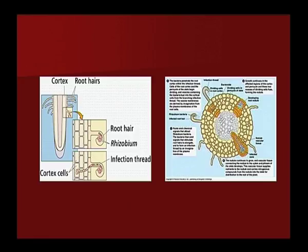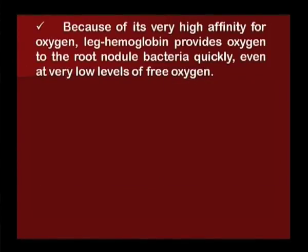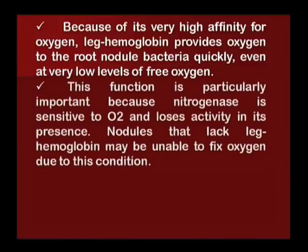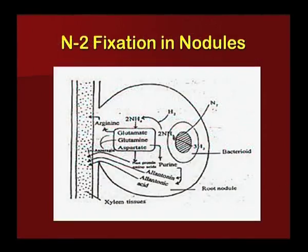In this diagram, we can see that the Rhizobium forms an association with root hairs, enters through the root, and then forms a symbiotic association, metabolically converting nitrate into nitrite and ammonia through the nitrogenase system. Because of its very high affinity for oxygen, leghemoglobin provides oxygen to the root nodule bacteria quickly, even at very low levels of free oxygen. This function is particularly important because nitrogenase is sensitive to oxygen and loses activity in its presence.